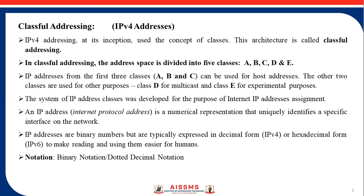In classful addressing, the address space is divided into five classes: A, B, C, D, and E. IP addresses from the first three classes — A, B, and C — can be used for host addresses, while the other two classes are used for other purposes: class D for multicast and class E for experimental purposes. An IP address is a numerical representation that uniquely identifies a specific interface on the network. These addresses are binary numbers but are typically expressed in decimal form or hexadecimal form to make reading and using them easier for humans. The basic notation for IPv4 addressing is binary notation or dotted decimal notation.